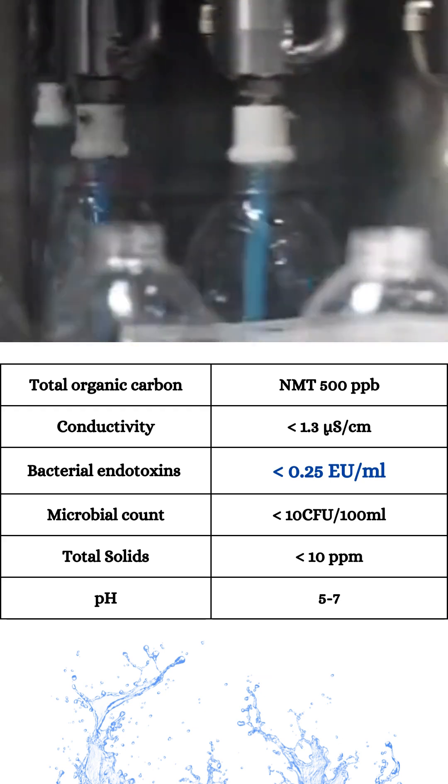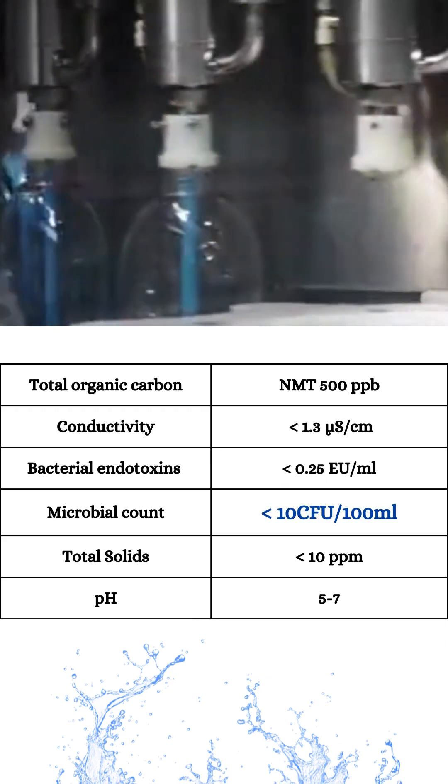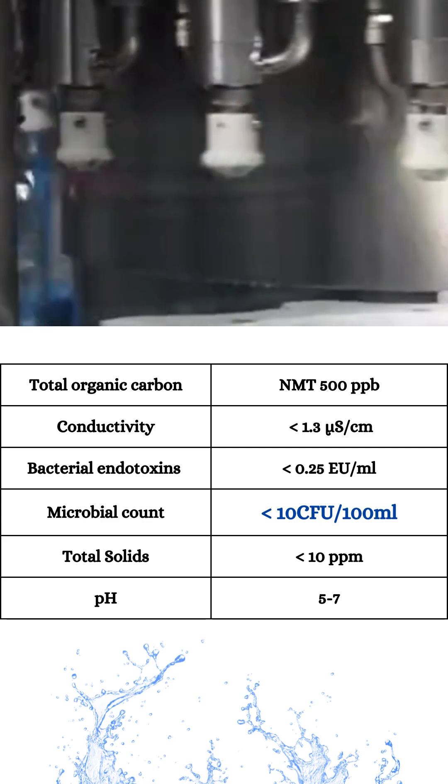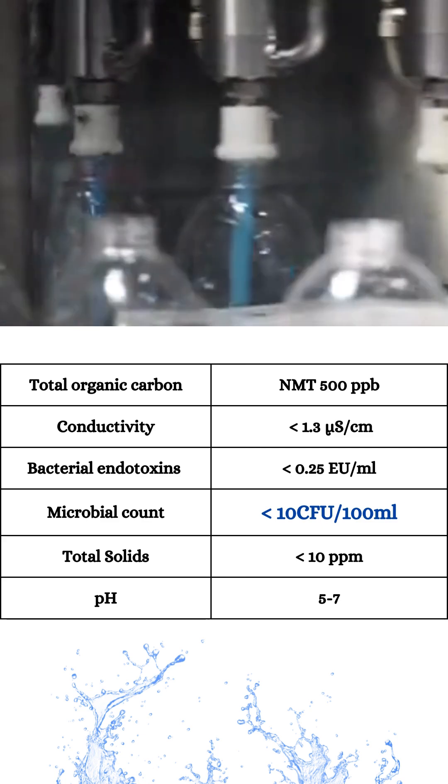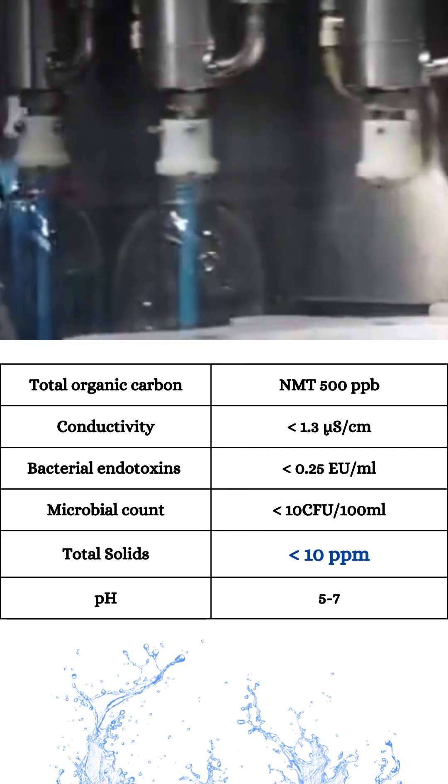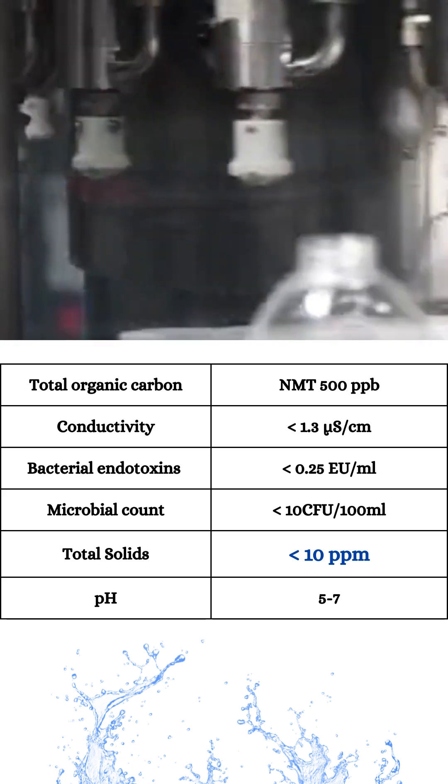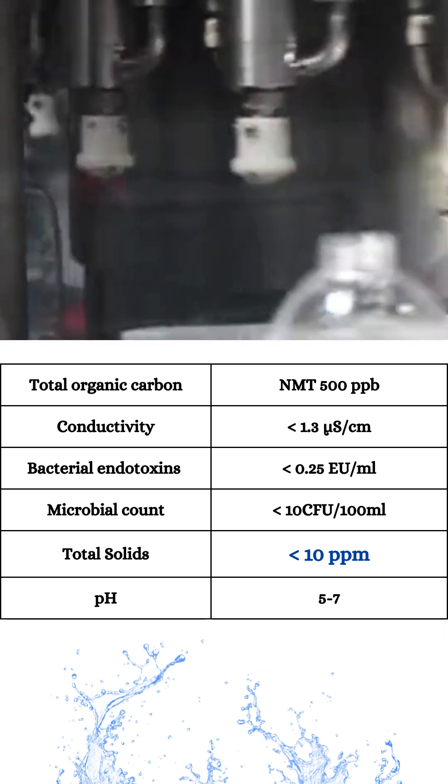Bacterial endotoxins must be below 0.25 endotoxin units per milliliter. The total aerobic microbial count must be less than 10 colony forming units per 100 ml. The total solids must be less than 10 parts per million.